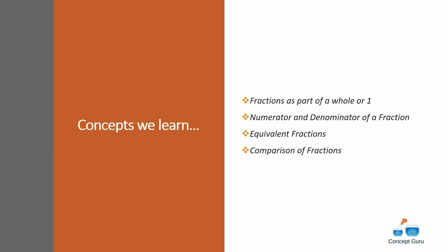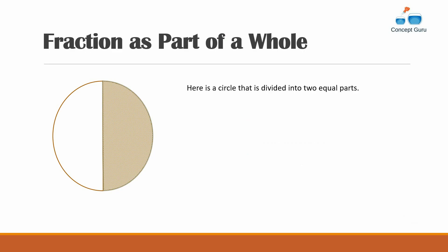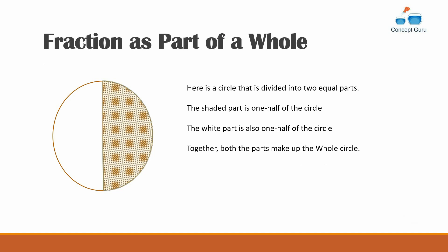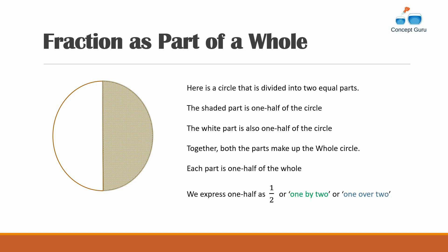Let's start by looking at this circle. This circle is divided into two equal parts. The shaded part is one half of the circle, and the white part is also one half. Together, both parts make up the whole circle. Each part is one half of the whole. We express one half as one over two, written with a line between them — one by two.